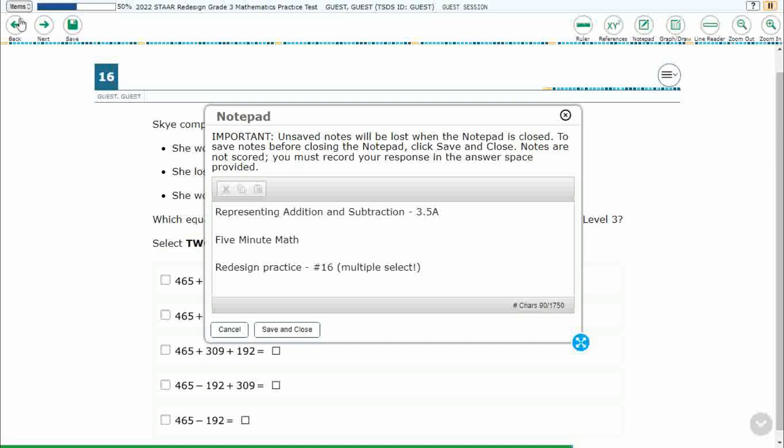This is standard 3.5a in the great state of Texas, and we are using item number 16 off the Redesign Practice Online Star Test, and this uses a new item type, multiple select.